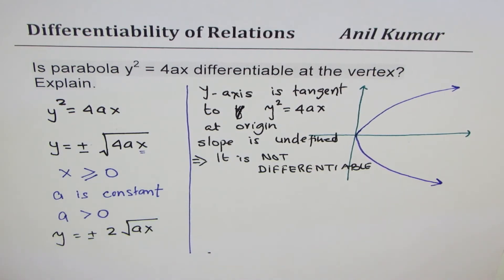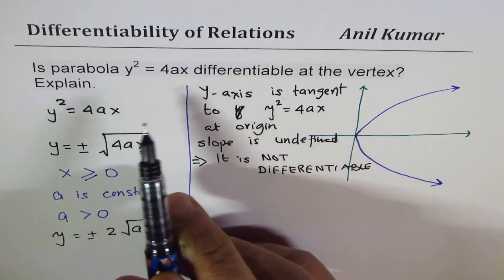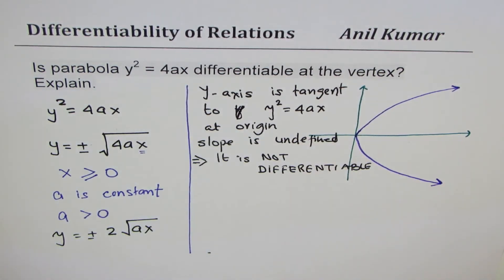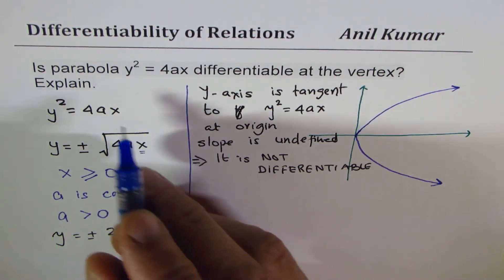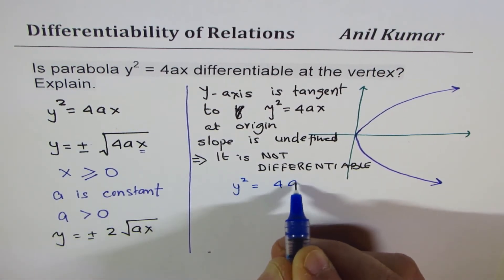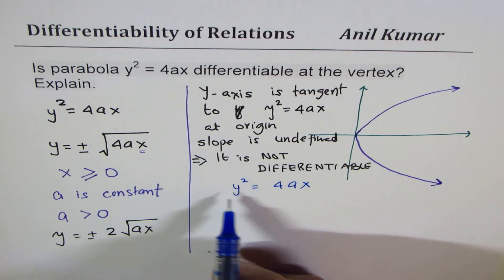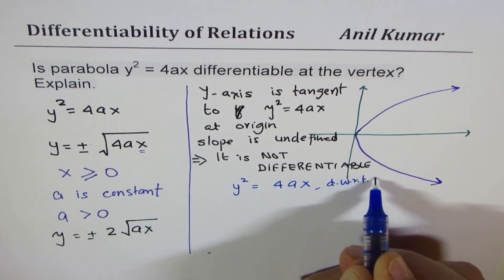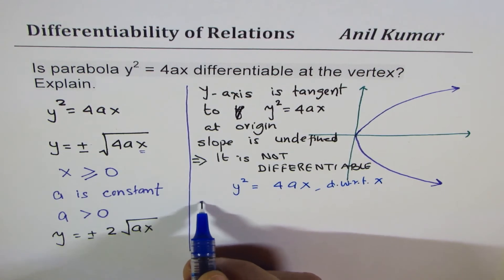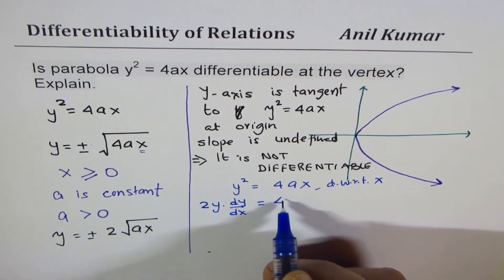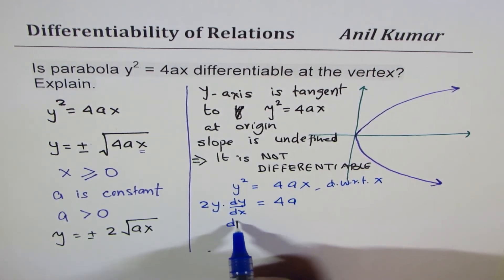For example, y² = 4ax. If you differentiate with respect to x, you get 2y(dy/dx) = 4a, so dy/dx = 4a/(2y).